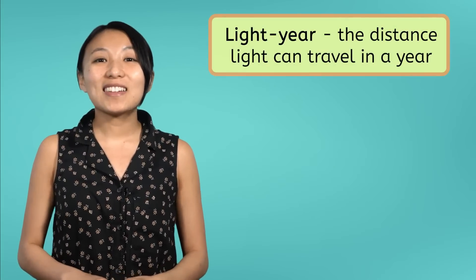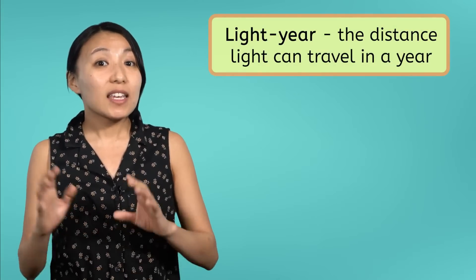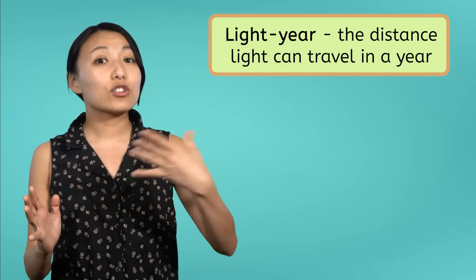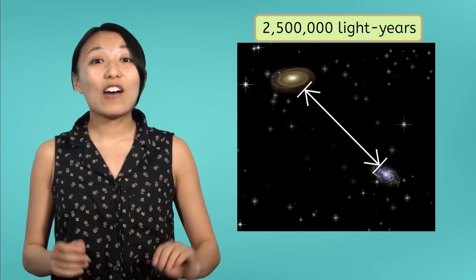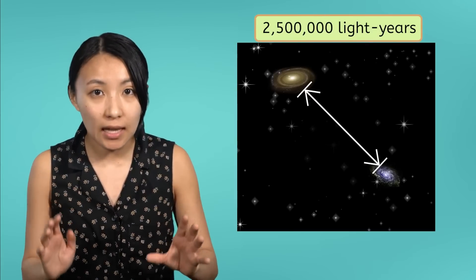As you might remember, a light year is a measure of distance equal to the amount of time light can travel in a year. Well, the nearest galaxy to the Milky Way, the Andromeda Galaxy, is two and a half million light years away.